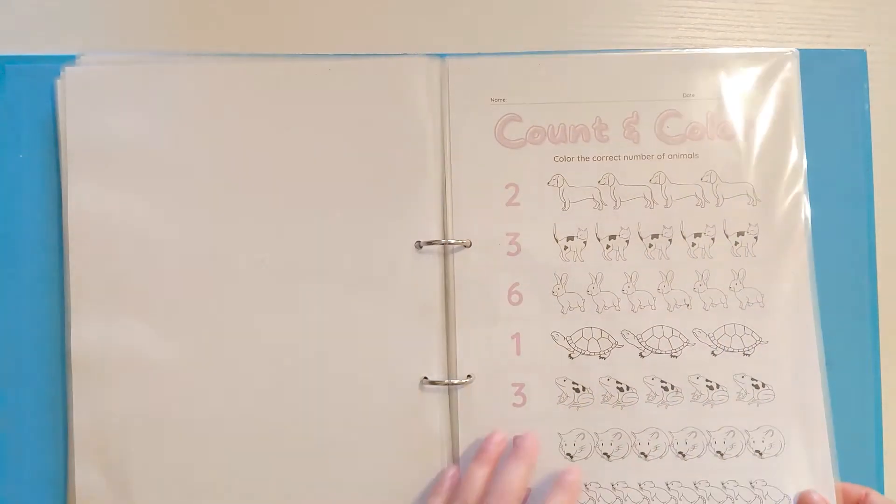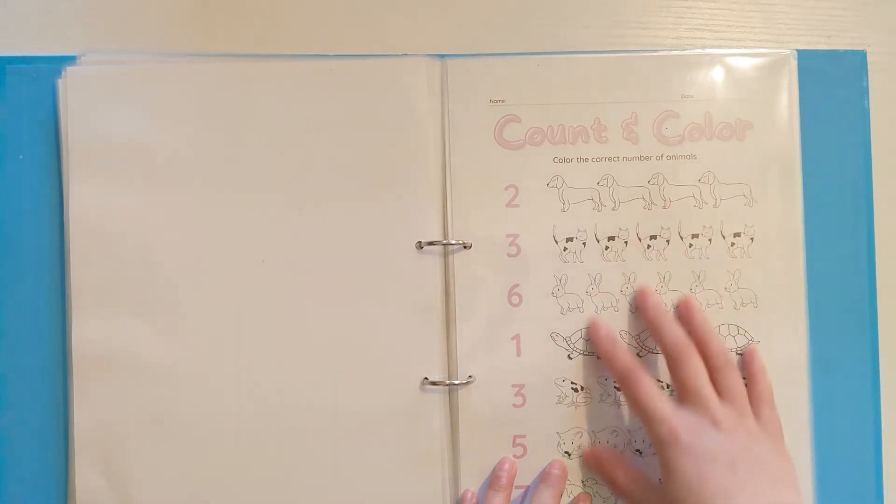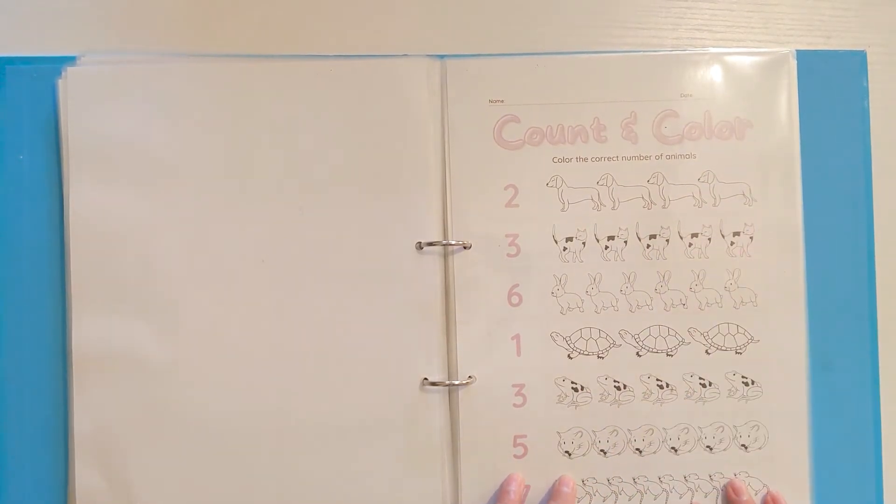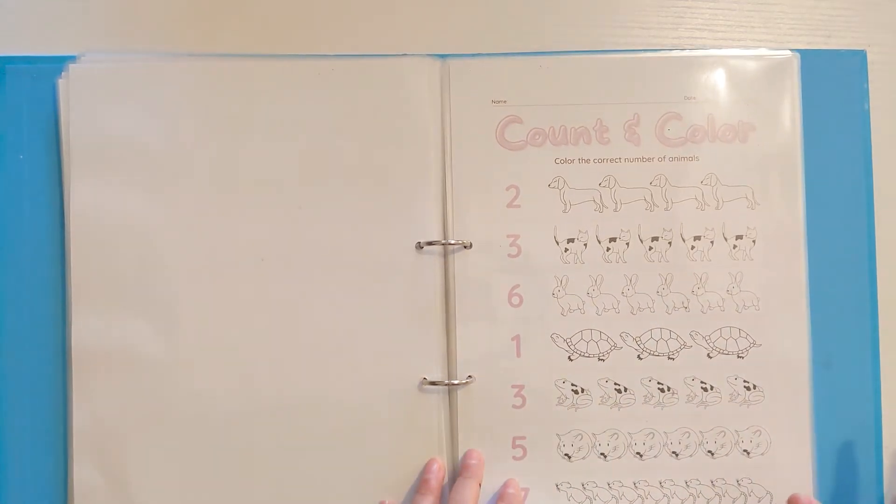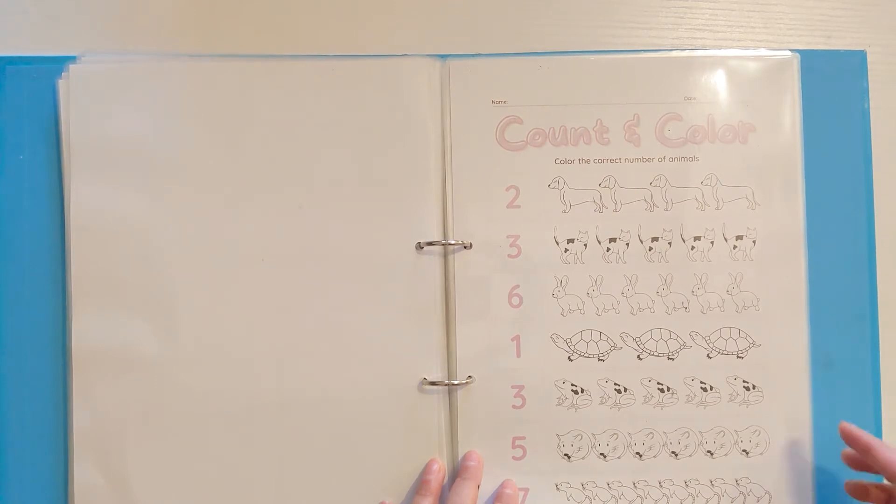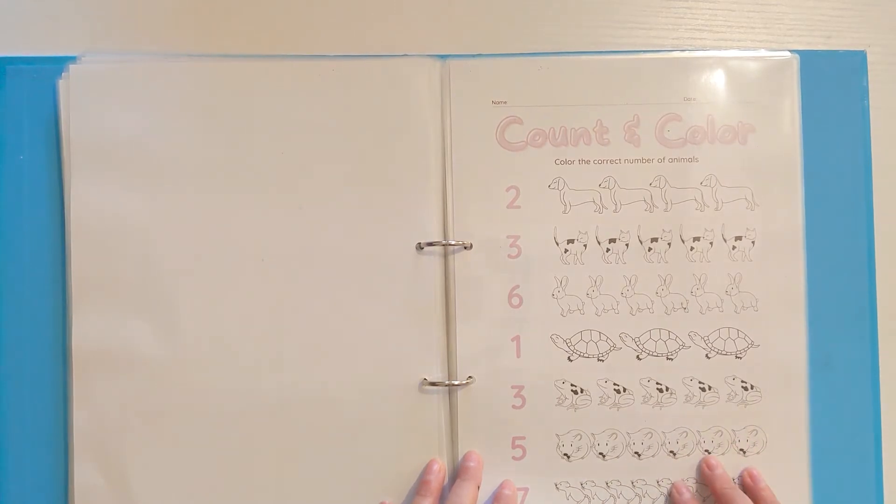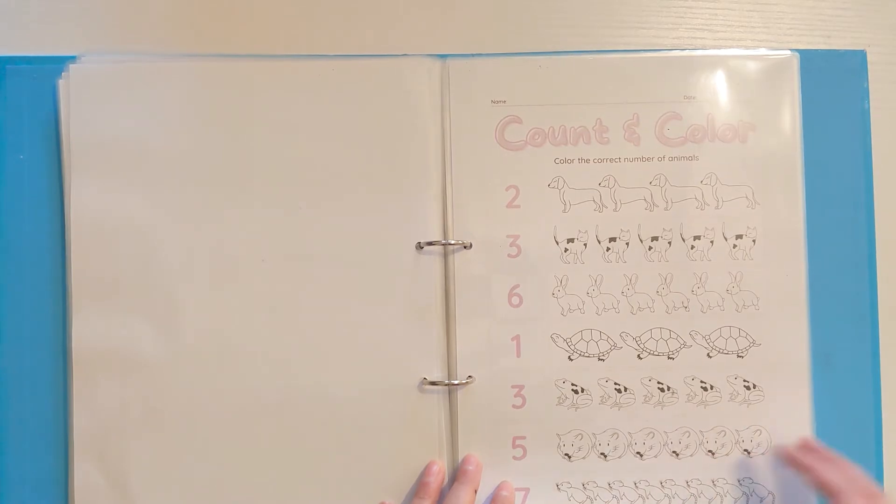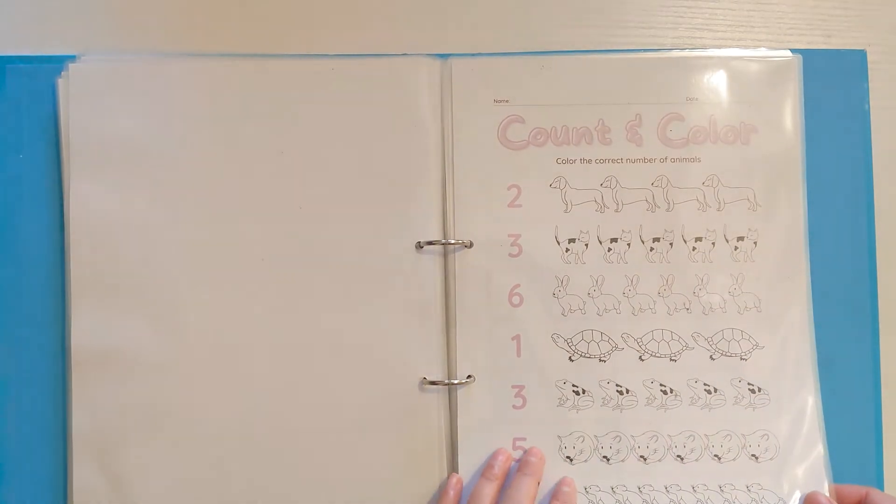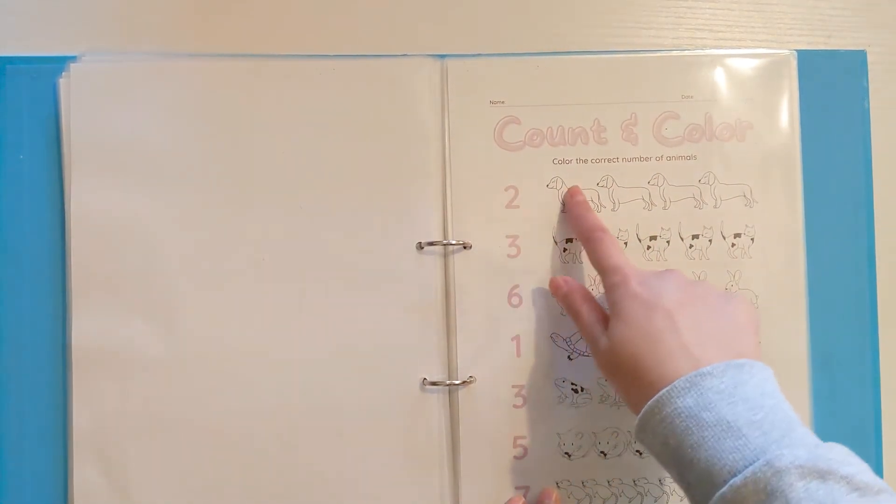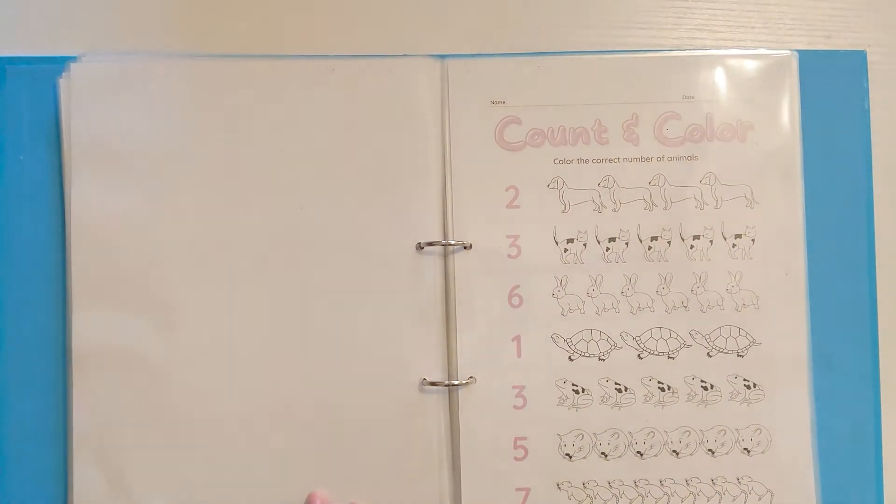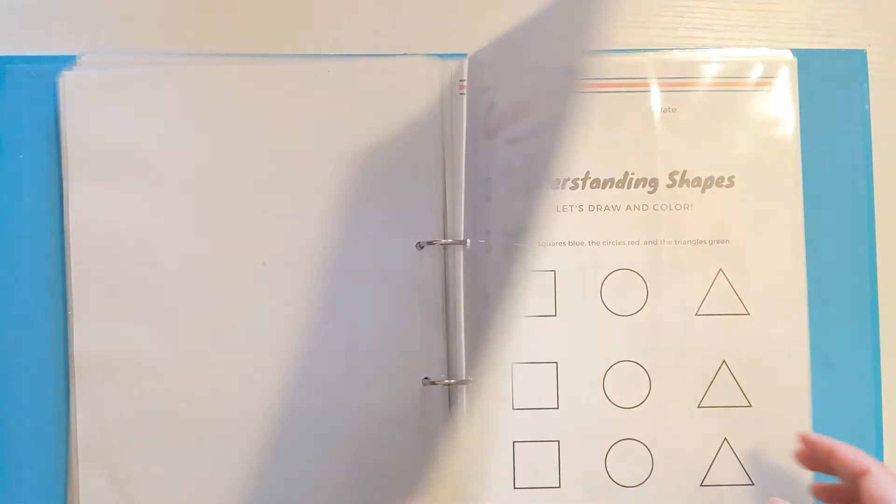Then we've got a similar one, count and color. You might not want to laminate this one or you might just want to keep one laminated for reference or for photocopying. I've just kept them all together in my folder so I know where they are. You can get different colored wipeable pens as well if you want to stick to the lamination. Color the correct number of animals. We've got two so you would just expect them to color two and you could guide them through it.